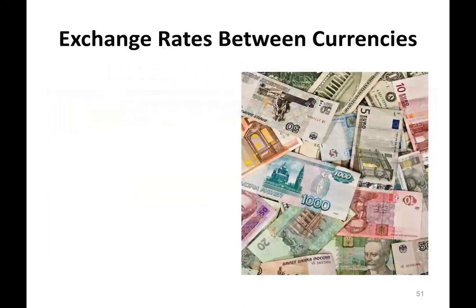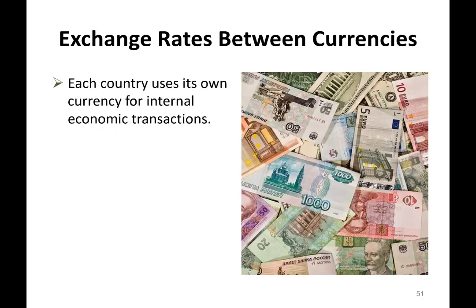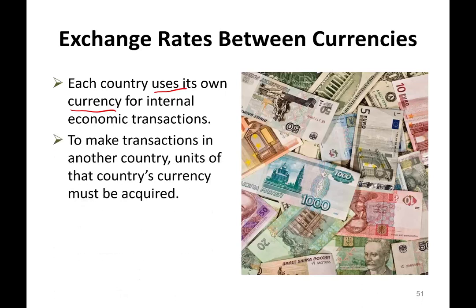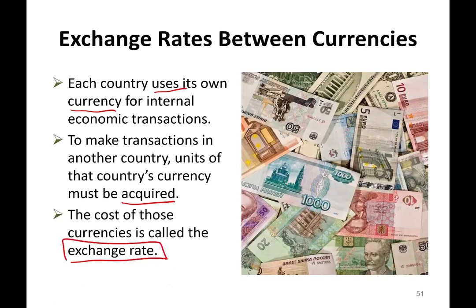Just a little bit of basics about exchange rates between different currencies. Each country uses their own currency. For example, if you're operating in Europe and you sell your McDonald's, you're going to receive Euros, not U.S. dollars. To make a transaction in another country, you have to acquire those currency units. So if you purchased supplies from Germany and they want to be paid in Euros, then you have to buy the Euro and pay them. The cost of the currency is called the exchange rate, and the exchange rate fluctuates on a regular basis. The best way to illustrate this is to work an example — one for selling and one for buying.